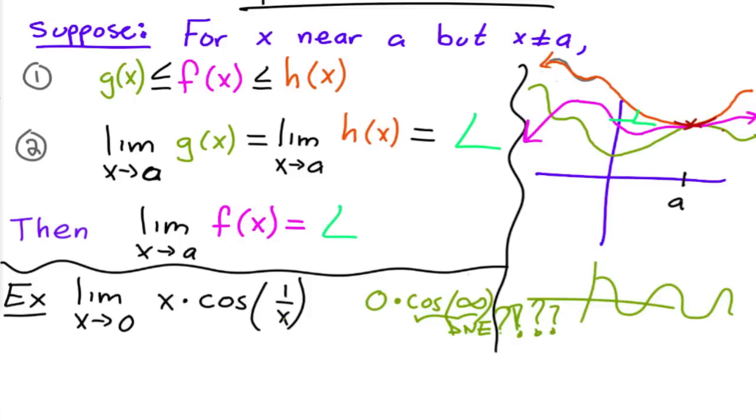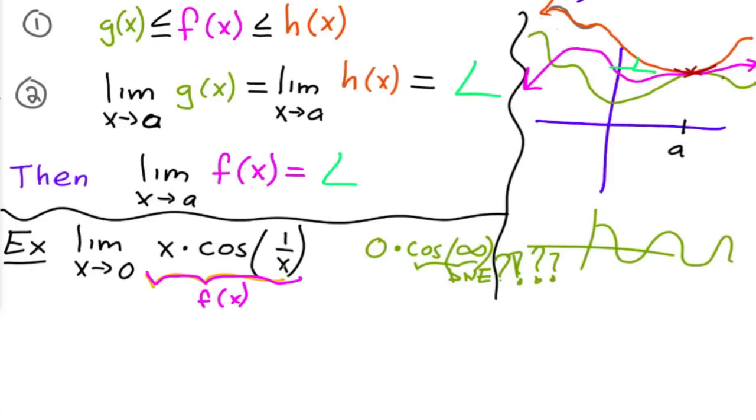For trig limits, the usual strategy is to use the squeeze theorem. Now what we need to do is two things: we need to find the two functions that our function is surrounded by. So here, if I'm using this as a framework, this is my f of x.